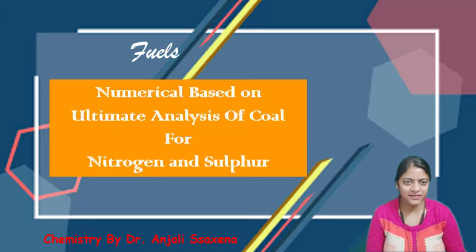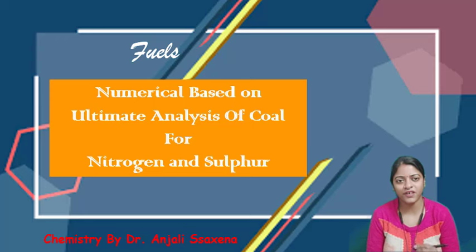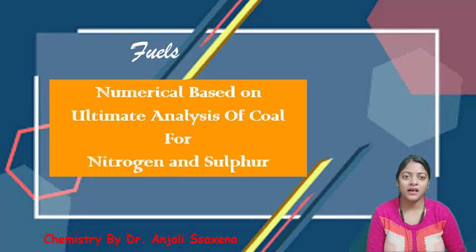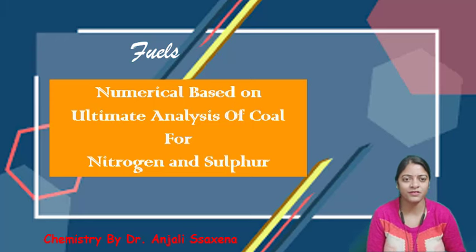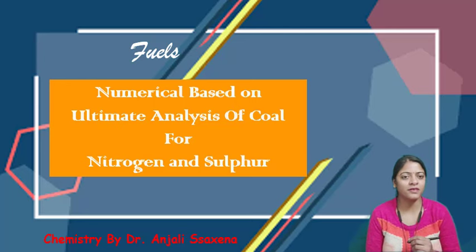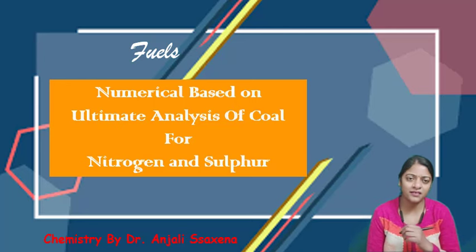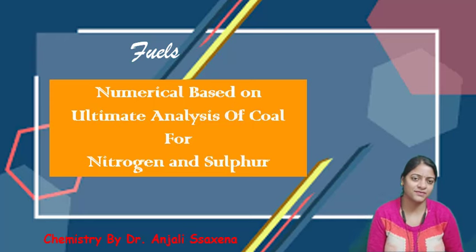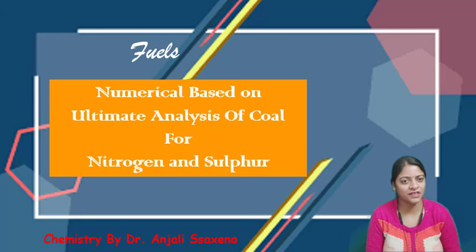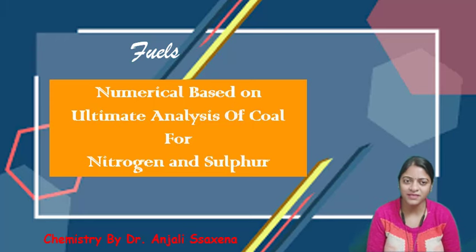Ultimate analysis, जिसे हम elementary analysis के नाम से भी जानते हैं, जिससे हम analysis कर सकते हैं percentage of carbon, percentage of hydrogen, percentage of nitrogen, percentage of sulfur and percentage of oxygen. Ultimate analysis क्या है, यह मैं अपनी previous videos में आपको समझा चुकी हूँ, जिसका link description box में available है। Percentage of carbon और percentage of hydrogen कैसे calculate किया जा सकता है, यह हमने अपनी last की video में समझा है। अब आज की इस video में हम calculate करने जा रहे हैं percentage of nitrogen and percentage of sulfur।